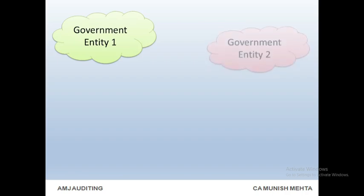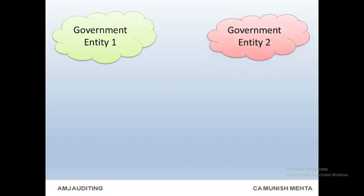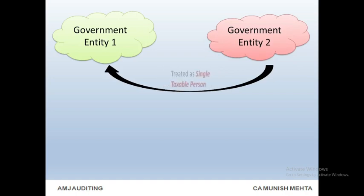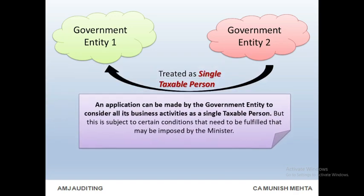Where there is Government Entity 1 and Government Entity 2, they can be treated as a single taxable person. An application can be made by the government entity to consider all its business activities as a single taxable person, but this is subject to certain conditions that need to be fulfilled as may be imposed by the minister.